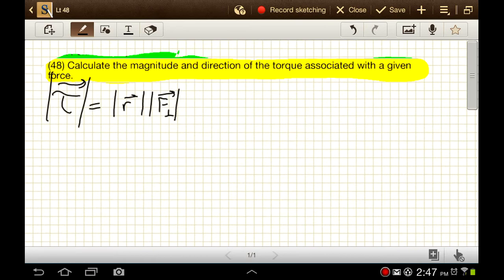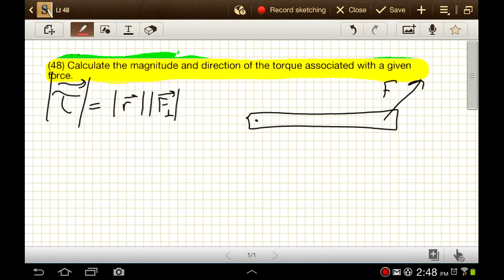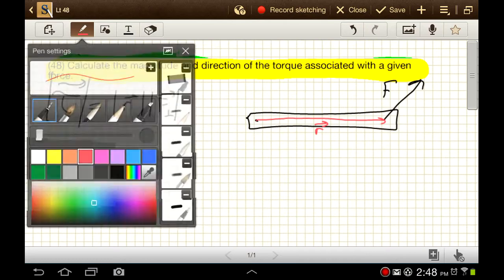So maybe we have a door. It has a hinge, we're looking down on this door, and maybe we've got a force F here. Then r would be a vector that goes from the hinge to that location where the force is being applied.